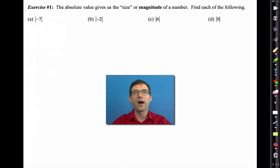But let's first start with absolute value. The absolute value gives the size or magnitude of a number. So what we want to do is find each of the following. Now you've worked with absolute value before so this should be review. These symbols mean absolute value and they're actually quite simple.